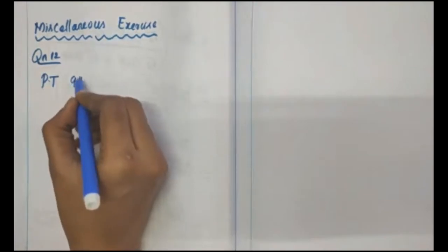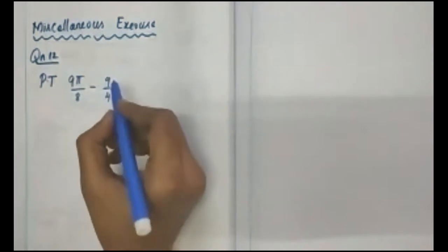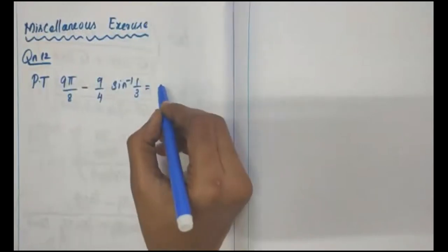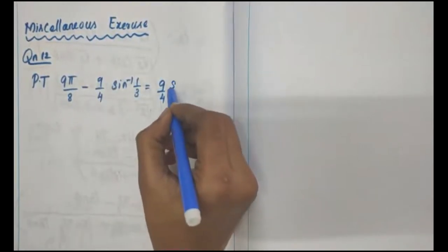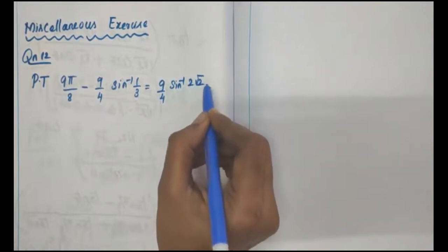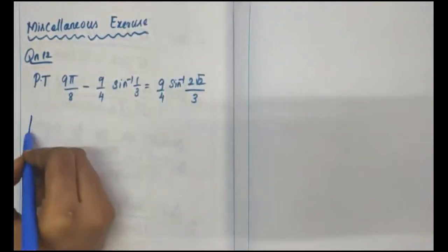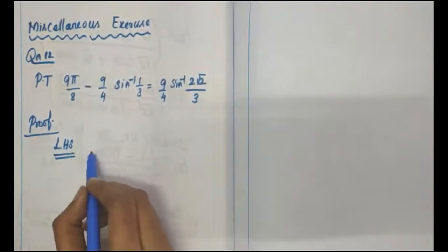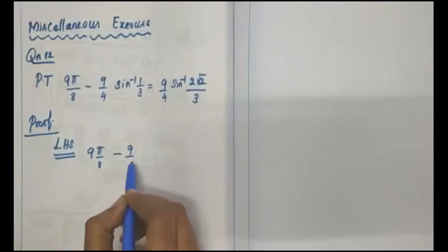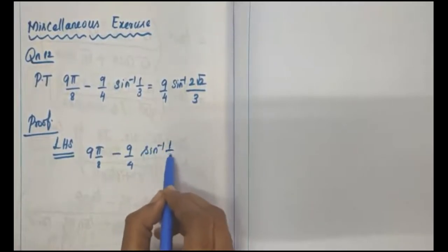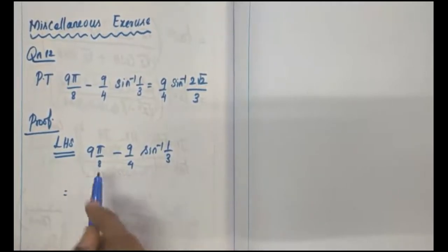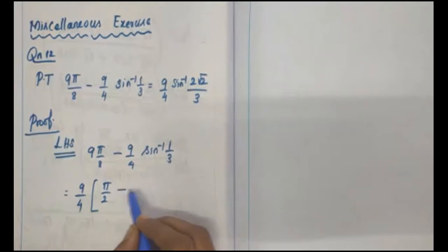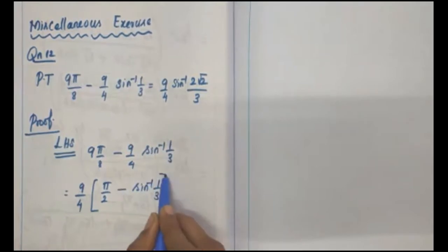Prove that 9 times π/8 minus 9/4 sin⁻¹(1/3) equals 9/4 sin⁻¹(2√2/3). The left hand side is 9 times π/8 minus 9/4 sin⁻¹(1/3). Taking 9/4 as a common factor, the remaining expression is π/2 minus sin⁻¹(1/3).